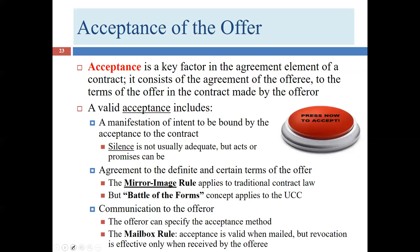Let's begin with what an acceptance is. It consists of the agreement of the offeree — that's the person who receives the offer — to the terms of the offer in the contract made by the offeror, who is the person who makes the offer.